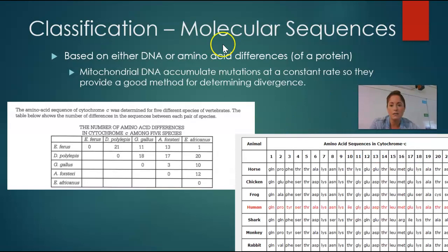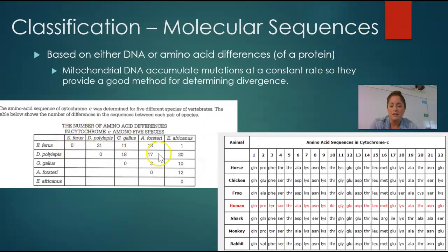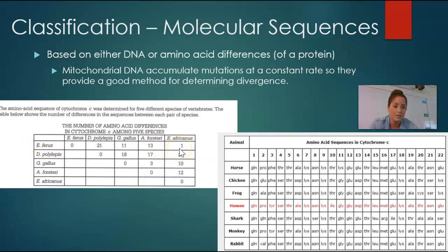The last way we can classify organisms is based on molecular sequences. These are based on amino acids — this question here is from an old exam. It's basically showing the number of amino acid differences between species in a certain protein, cytochrome C. The more differences there are, the less related they are; the fewer differences, the more related. So ferrus and africanus are the most closely related because they have the fewest differences in their sequence. Usually we look at the human and determine who has the most differences — that's how you determine who is most closely related.